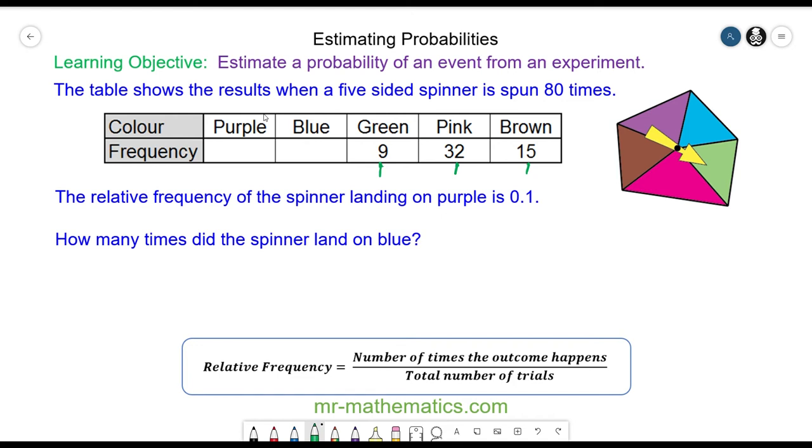Do you want to try and work out how many times the spinner landed on blue when the relative frequency of landing on a purple is 0.1? You can pause the video and resume it when you're ready.